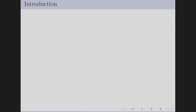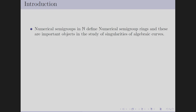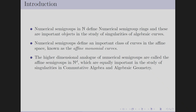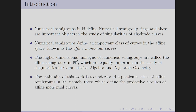The main objective of this talk is as follows. Numerical semigroups define numerical semigroup rings, which are important objects in the study of singularities of algebraic curves. These semigroups define a class of curves called affine monomial curves. The higher analog of a numerical semigroup is called an affine semigroup, and these are also important for the study of singularities in commutative algebra and geometry. Our main objective is to understand a particular class of affine semigroups in N², which defines the projective closure of affine monomial curves.